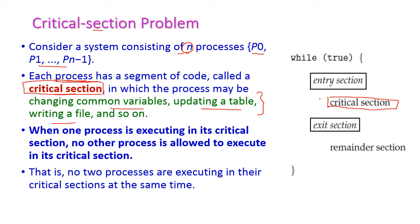When one process is executing in its critical section, no other process is allowed to execute its critical section because the critical section is common for all the processors. Suppose any one process is executing the critical section, then the other processes should wait until the first one completes its execution. No two processes should execute the critical section at the same time, otherwise a data inconsistency problem will occur.